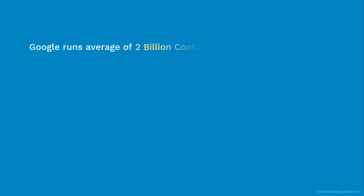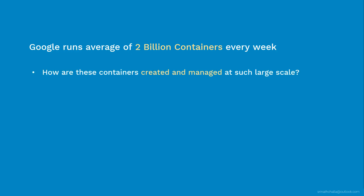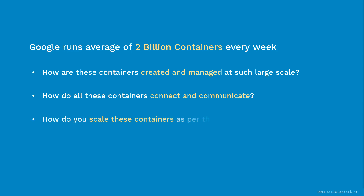Google runs an average of more than 2 billion containers per week — that is billion with a B. If you are not aware of this fact, I know how surprising it will be. After hearing this for the first time, you will be wondering how these containers are created and managed at such a large scale, how they connect and communicate together, and how you scale them as traffic demand goes up and down.